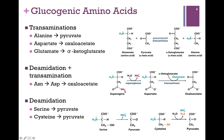Asparagine is first deaminated — we take off the amine group on the side chain — and it becomes aspartate, which can then be transaminated to form oxaloacetate. At the bottom of the screen here, serine can be deaminated to form pyruvate. And cysteine, as well, gives rise to pyruvate with the deamination and with a removal of the sulfhydryl group on the side chain.